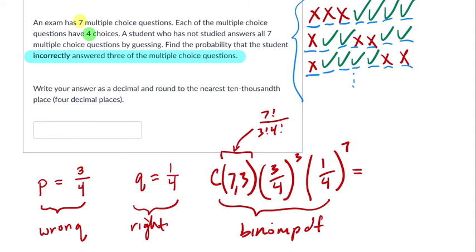And we're rounding to the nearest ten-thousandth. So it's 0.0577. And that's our answer.